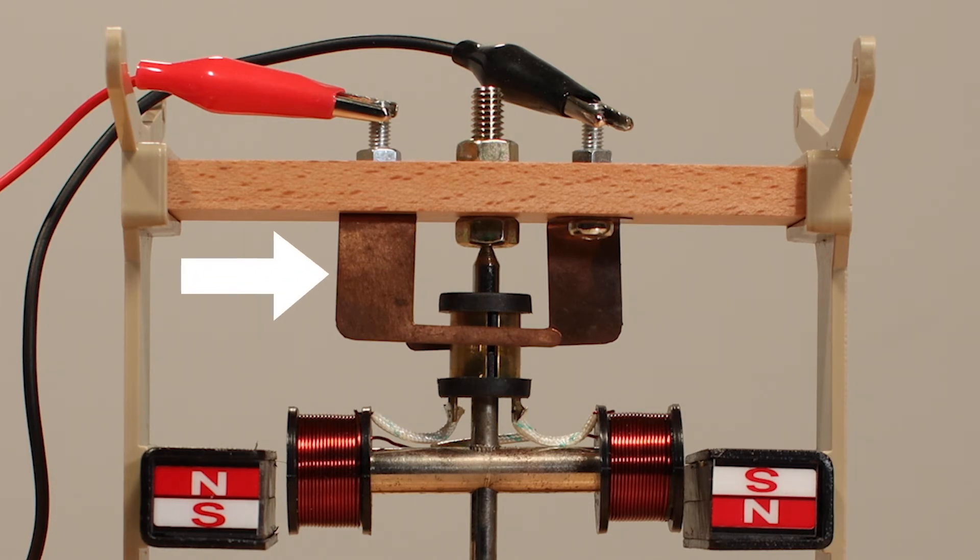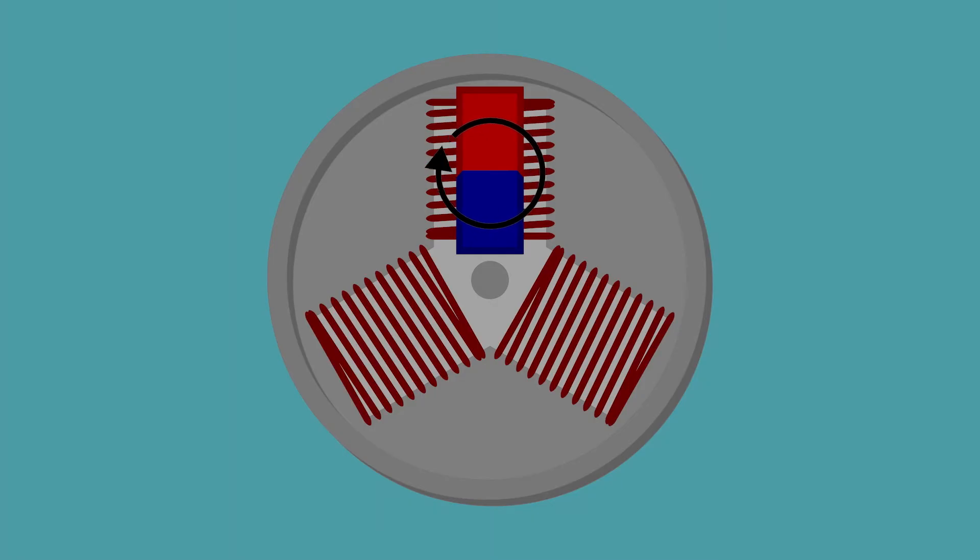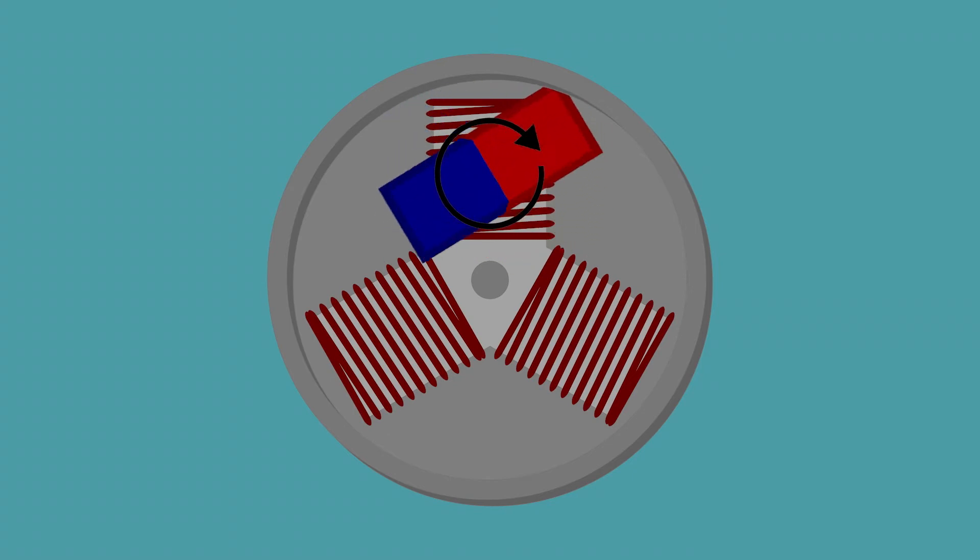With the pad touching one brush, power runs through the coil in one direction, and in the other direction when the pad is touching the other brush. Remember that the current changing direction changes the poles of the magnetic field of the coil. So every time the current changes direction, it's like a magnet flipping.